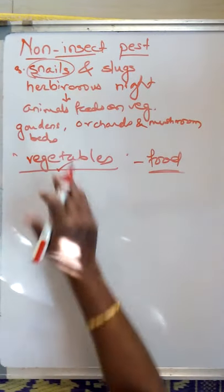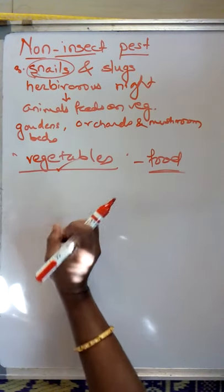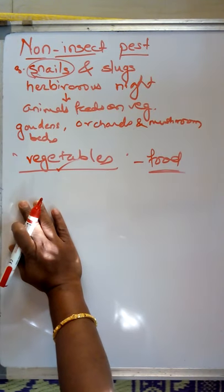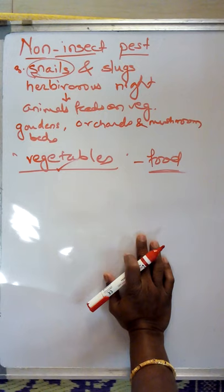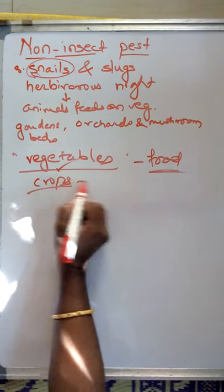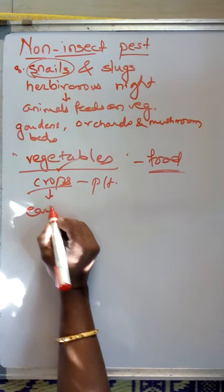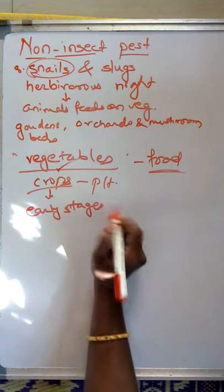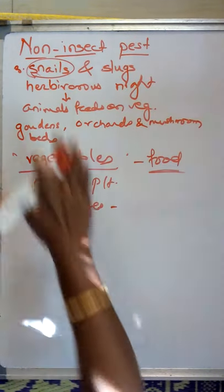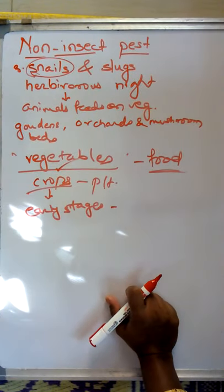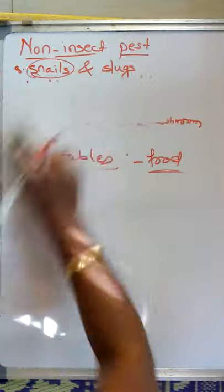These snails have not only attacked vegetables but also different types of fruits and ornamental plants in several states — for example, Orissa, West Bengal, Tamil Nadu, Maharashtra, and Kerala — where snails and slugs act as pests. They can damage crops, particularly attacking during the early stages when the plant material is very succulent and soft, making it easy for snails and slugs to eat.